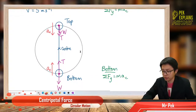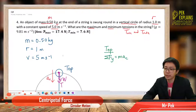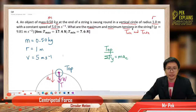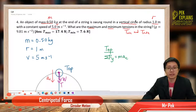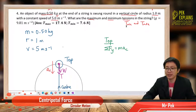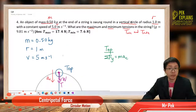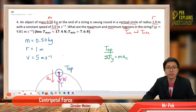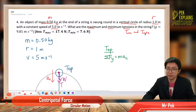Now, remember how you draw the free body diagram. Why do you have different tension in the string? It is because it is traveling in a vertical circle. When the object travels in a vertical circle, there will be different tension. If it's a horizontal circle, the tension is normally the same. But if it's a vertical circle, the tension becomes different depending on the position.